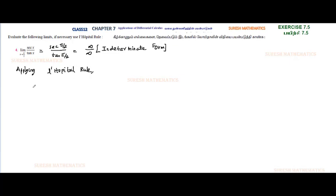So applying L'Hopital rule, we have limit x tends to pi by 2 minus. Secant x differentiated is secant x tan x. Tan x differentiated is secant square x.